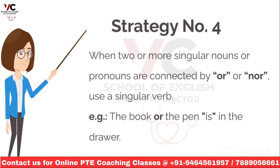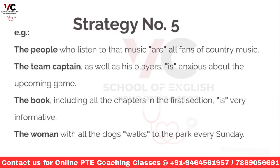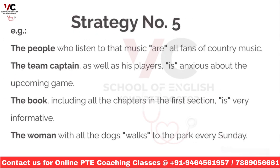Strategy number 4: when two or more singular nouns or pronouns are connected by or or nor, use a singular verb. For example, the book or the pen is. Strategy number 5: do not be misled by a phrase that comes between the subject and the verb. The verb agrees with the subject, not with a noun or pronoun in the phrase. For example, one of the boxes is. The people who listen to that music are. The team captain, as well as his players, is. The book, including all the chapters in the first section, is. The woman with all the dogs walks.